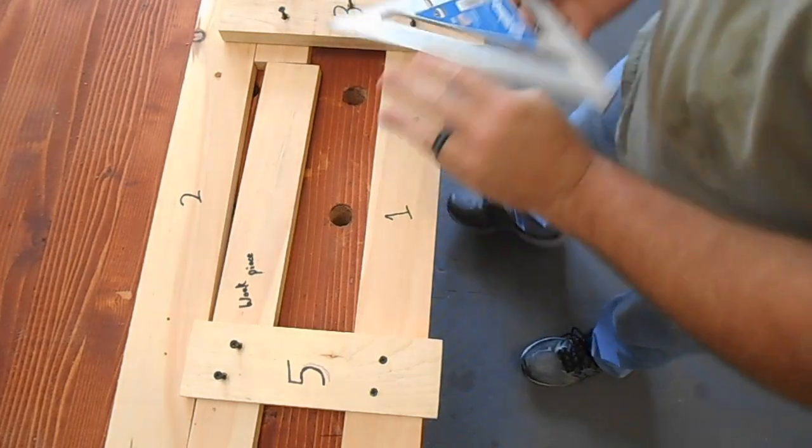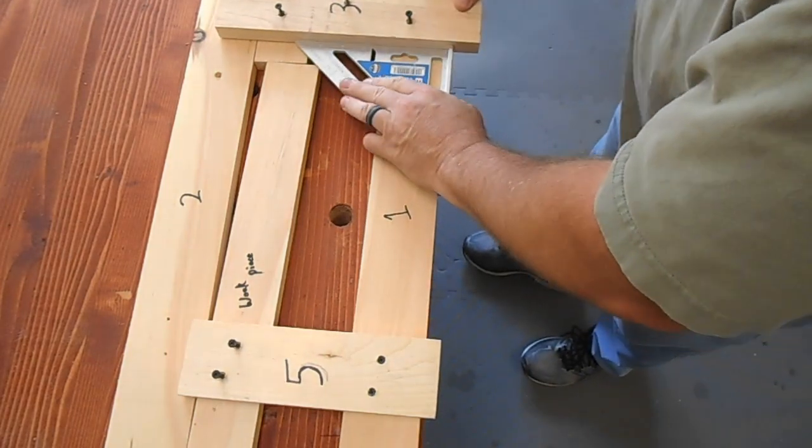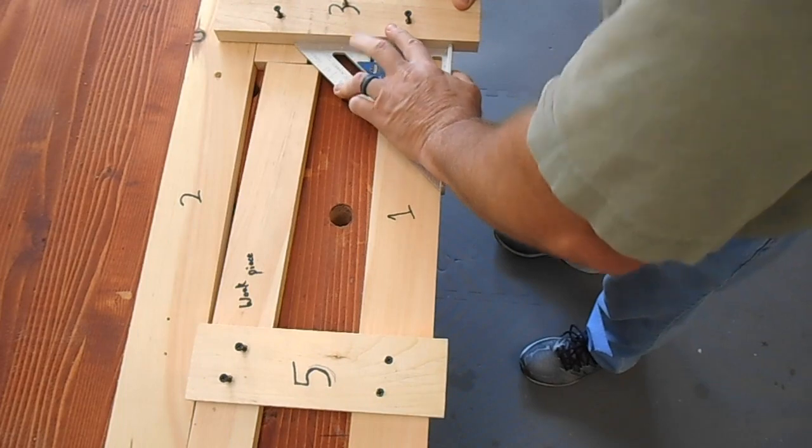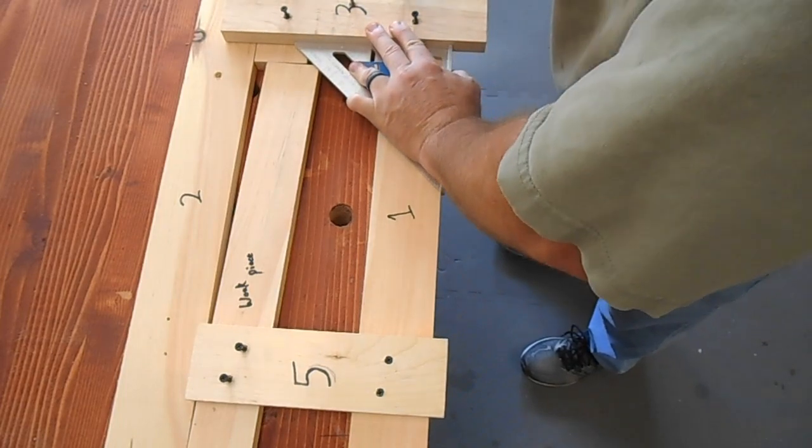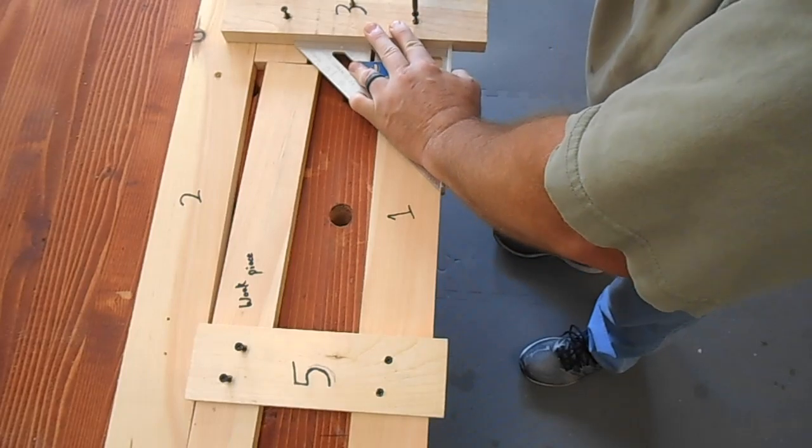On the other end, the fence, this does have to be square. So square that up with one side, either the first board or the second board. It doesn't matter. As long as your work piece is square, it'll all come together square.